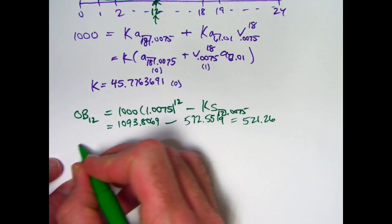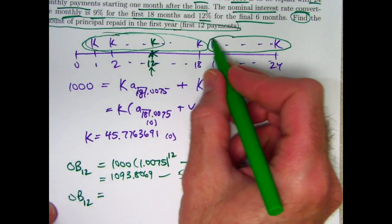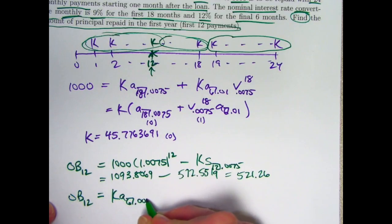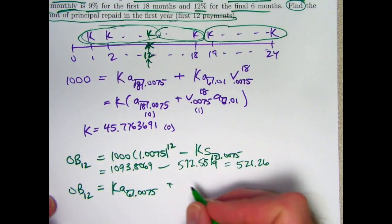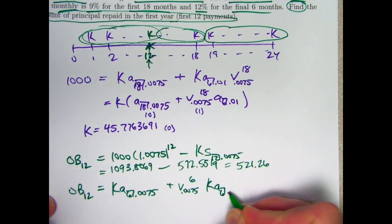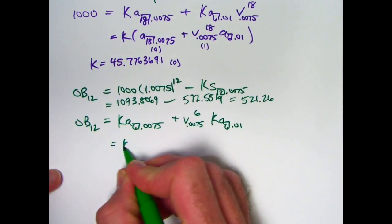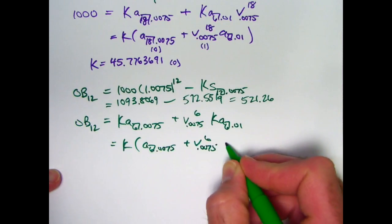I'll write that down in a minute, but let's also double-check the outstanding balance at time 12 with the prospective method, thinking of this balance as the present value of the remaining payments. So this would be, you've got six payments here, K times a-angle-6 at 0.0075, and then add on another six payments there that need to also go back by six periods from time 18 to time 12. You'd have V at 0.0075 to the sixth, K times a-angle-6 at 0.01. This should give the same thing. We'll factor out the K like this.